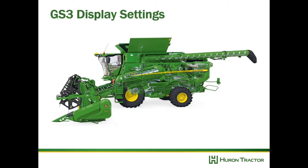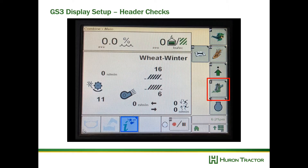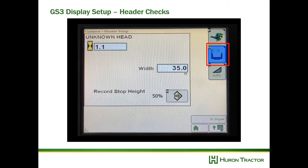In this video we're going to look at GS3 display settings for harvest. First we're going to select our combine, then we're going to select our header, then we're going to select the icon that has the header width, and then select the width of our header and enter the correct width. The width affects our documentation so we want it to be correct.